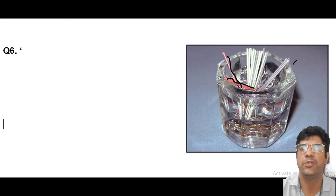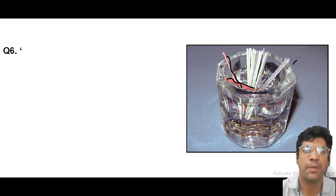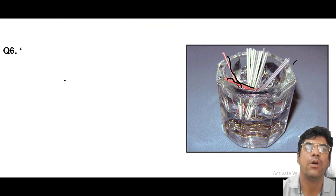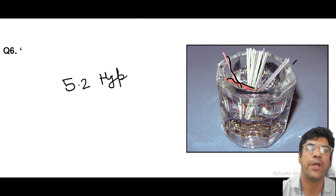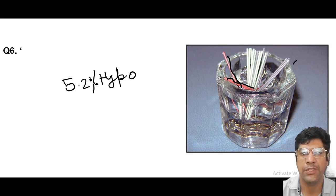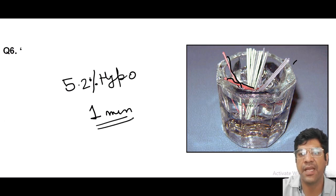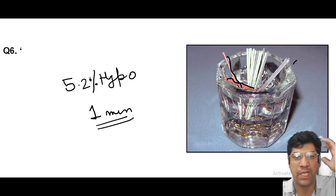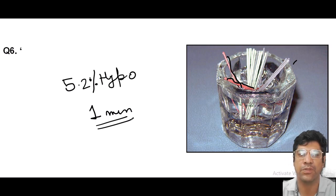To sterilize gutta-percha, we use 5.2% sodium hypochlorite for one minute. This 5.2% sodium hypochlorite for one minute ensures the sterility of gutta-percha cones, which is essential to prevent the introduction of bacteria into the root canal system during obturation. We sterilize or disinfect the gutta-percha cones using sodium hypochlorite for one minute.